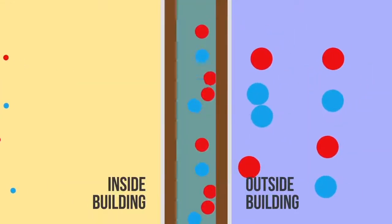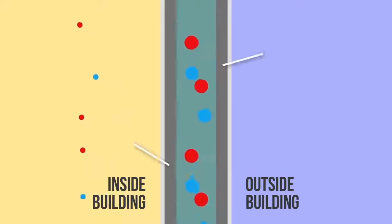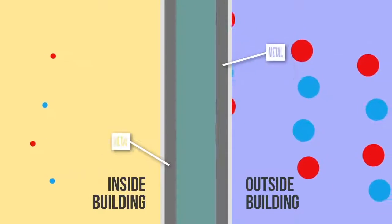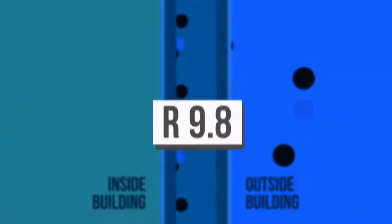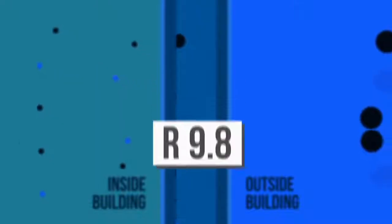But if I take that same assembly, I remove my wood studs and I just put in metal studs, that insulative effect, the thermal bridge created by the little highway through the metal studs drops the effective R value to 9.8 because of the thermal bridging in that wall.